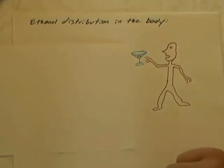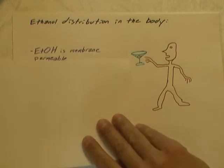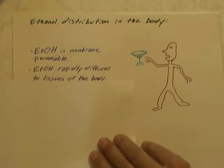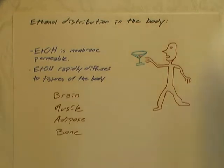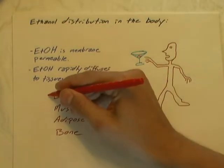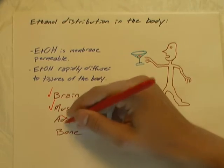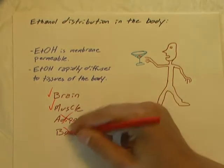This video describes ethanol distribution in the body. When a person consumes ethanol, if the amount consumed exceeds the capacity for metabolism, the ethanol, which is membrane permeable, rapidly diffuses to the different tissues of the body. It's not equally distributed through the whole body, though. Ethanol has a preference for brain and muscle, but it's generally excluded from adipose and from bone.